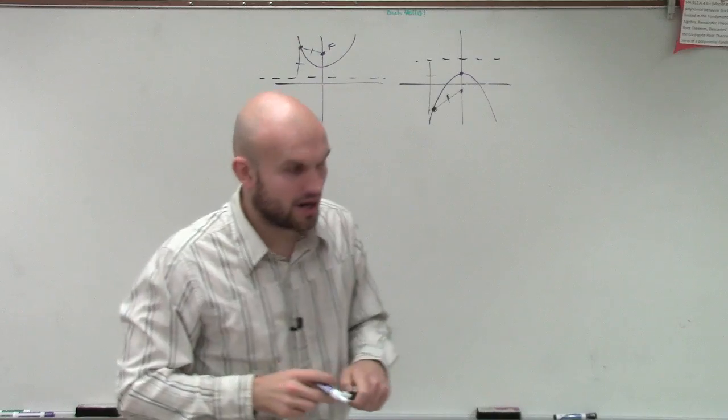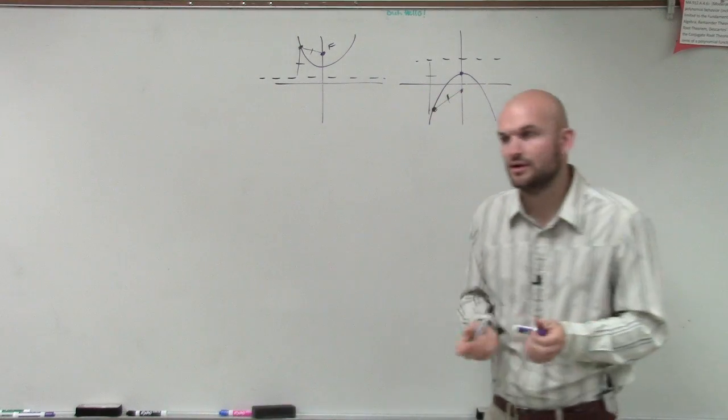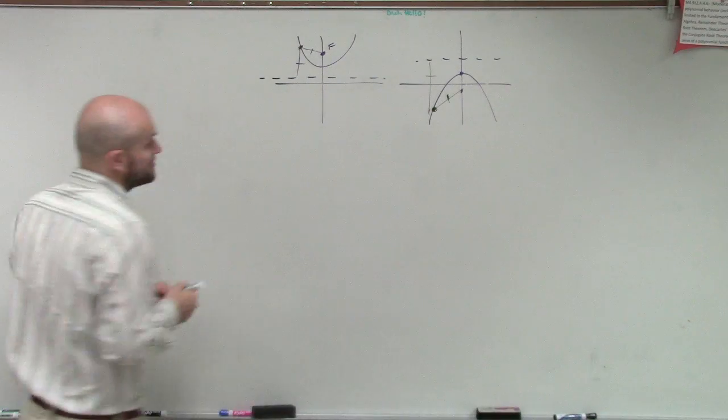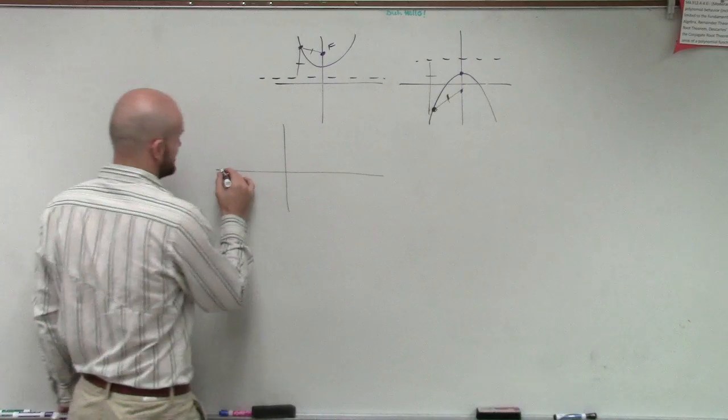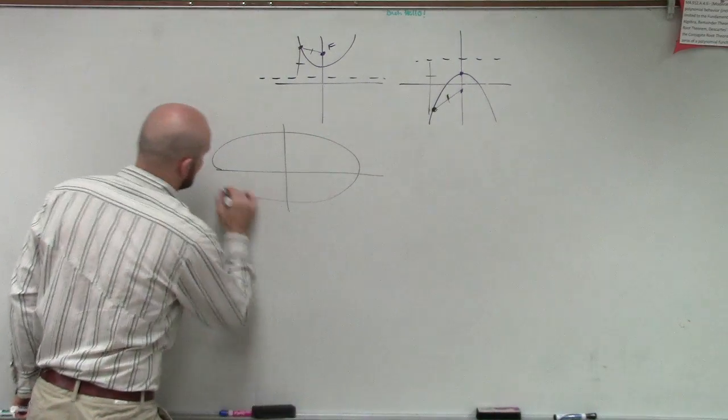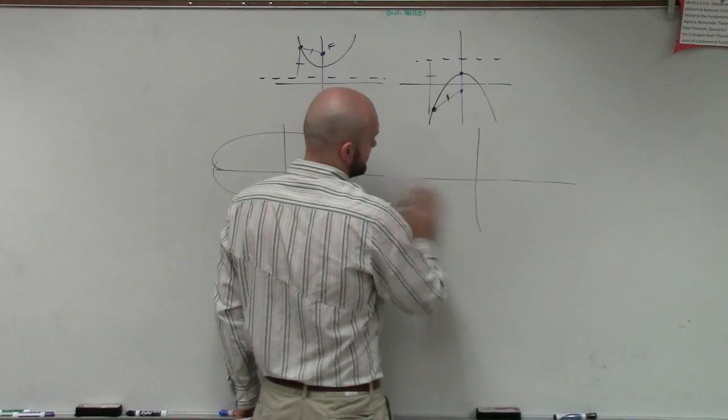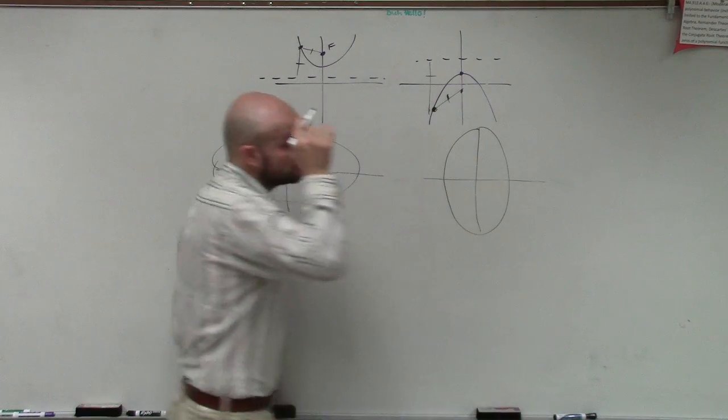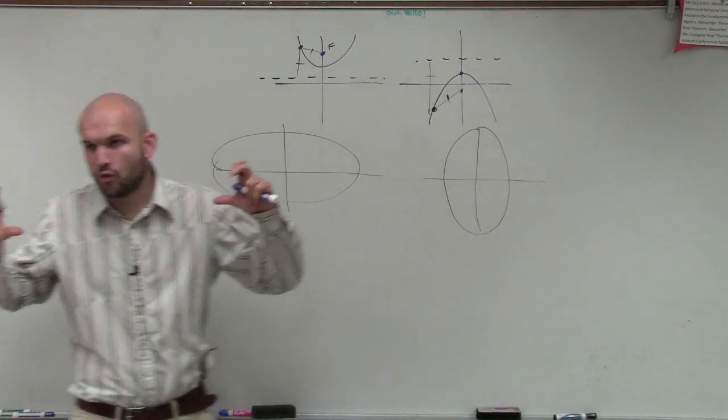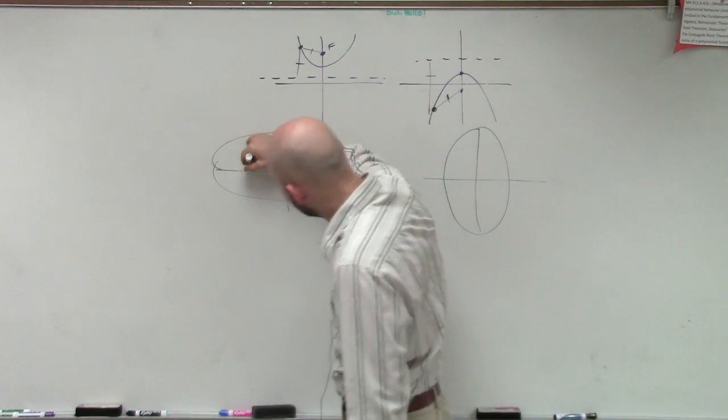So then we started talking. We said, what happens then? What if there was maybe like two of them together? And what we started bringing up is ellipses. And we took a look at ellipses and formulated a definition of ellipse. So if we kind of took two parabolas and kind of forced them towards each other.